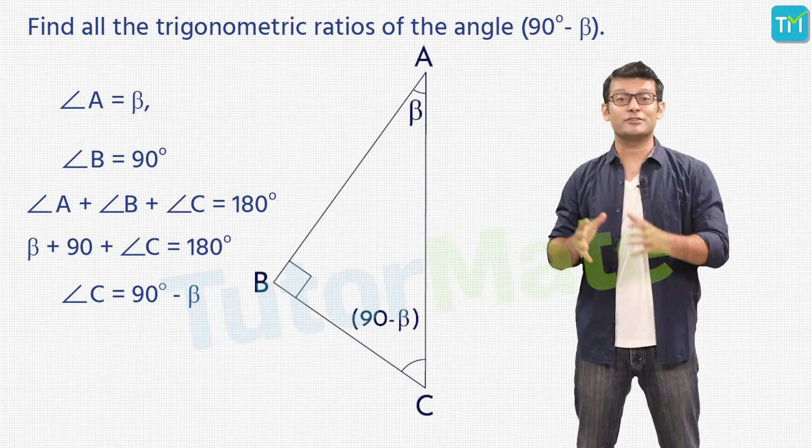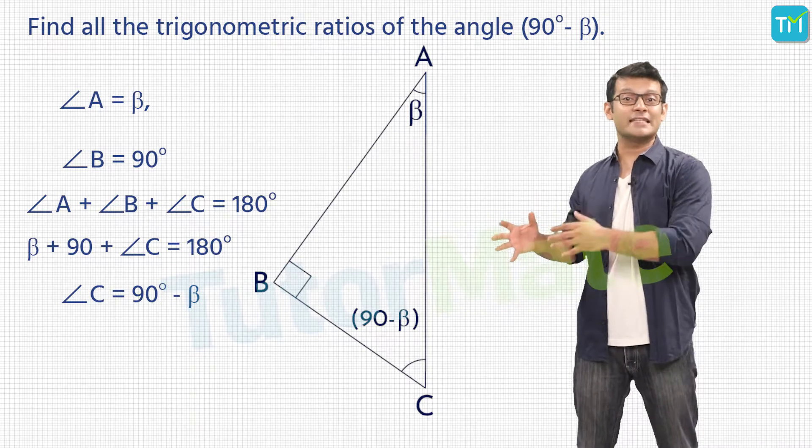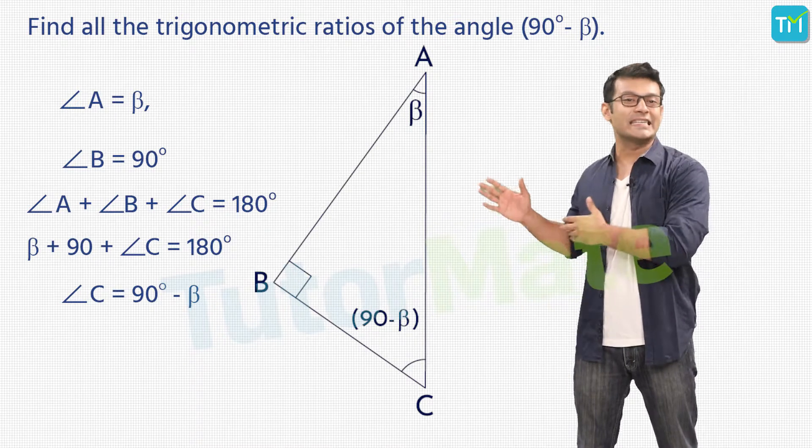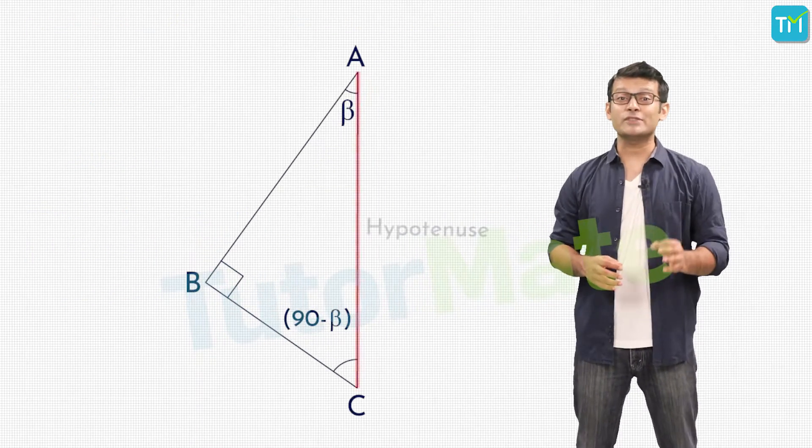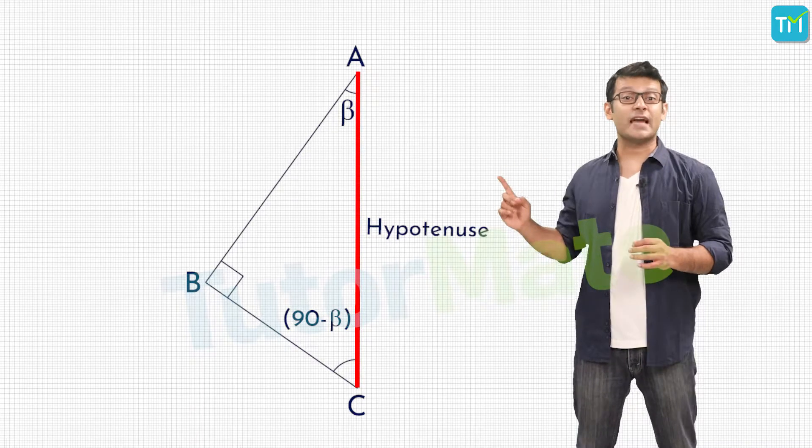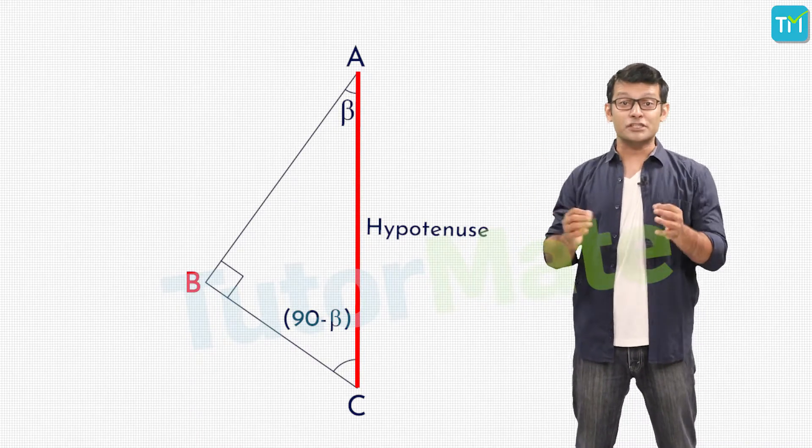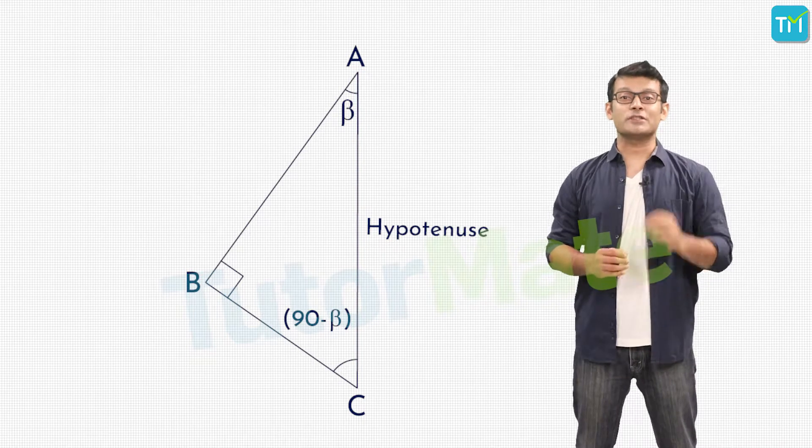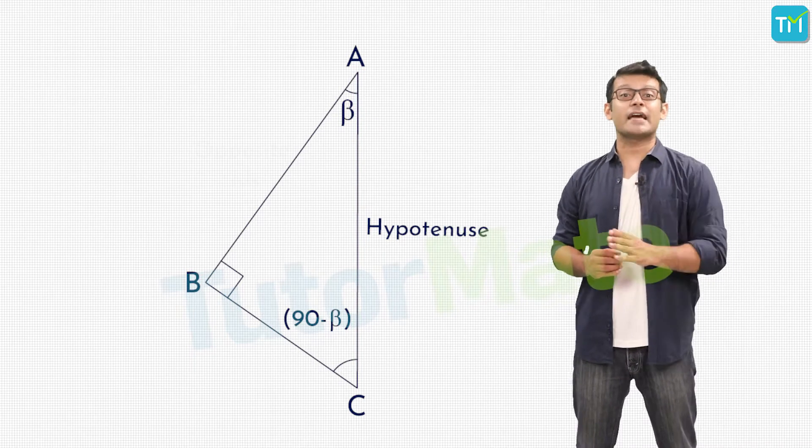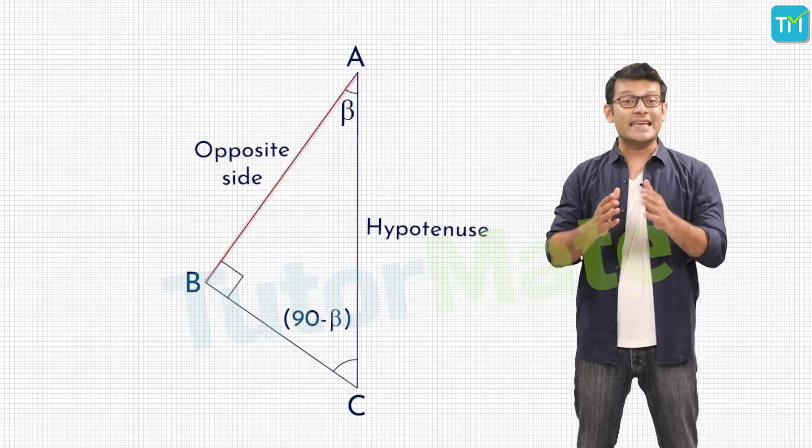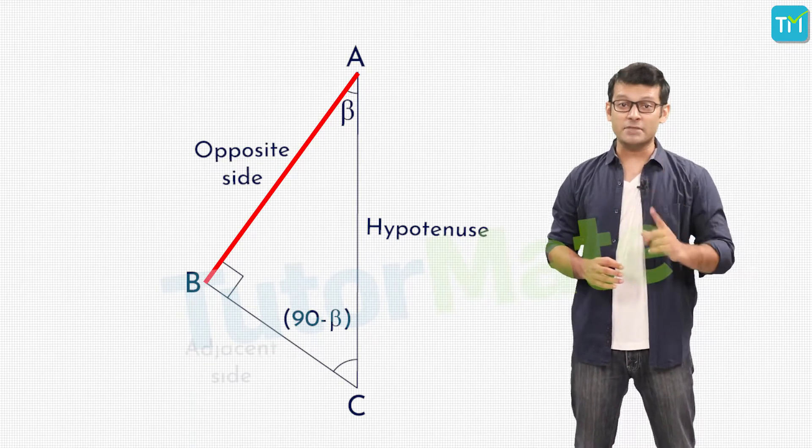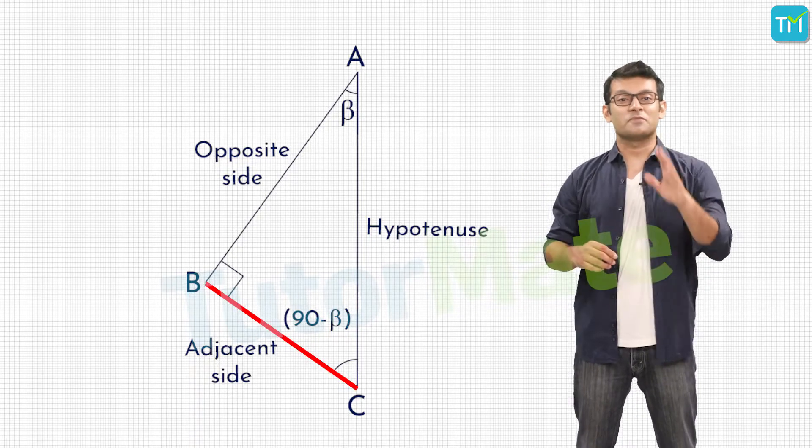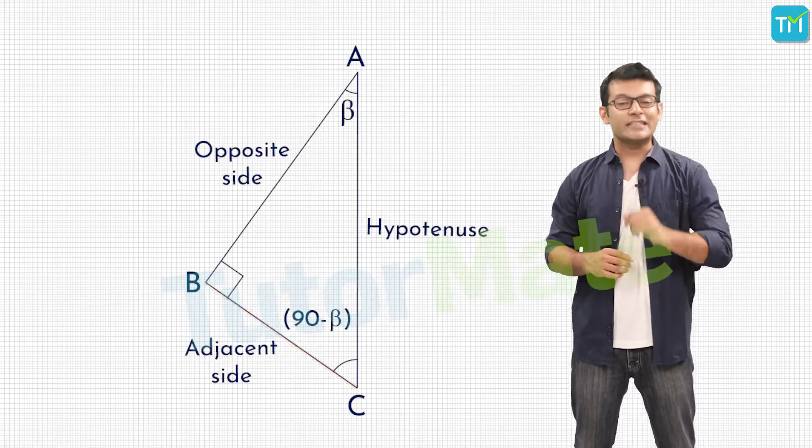So you know what that means? It means that when we are finding the trigonometric ratios for the angle (90° - β), we basically want the ratios for this angle C. Now the hypotenuse is AC because that is the side opposite of angle B, which is the 90 degree angle. Also, the side opposite to (90° - β), that is the side opposite to angle C, is AB. At the same time, the adjacent side of (90° - β) is BC.